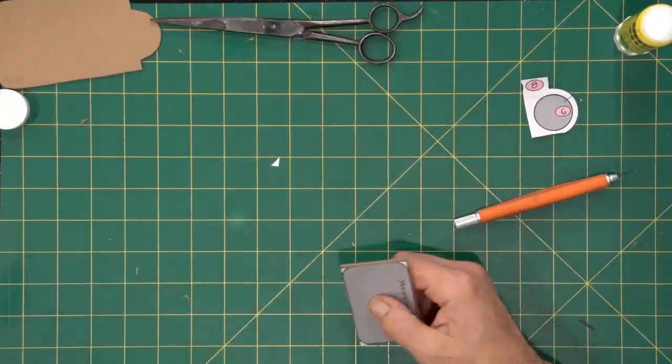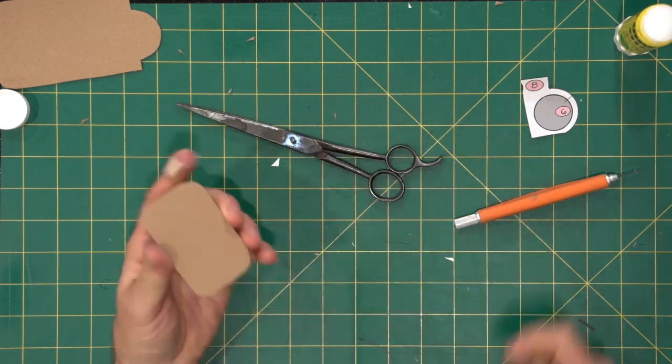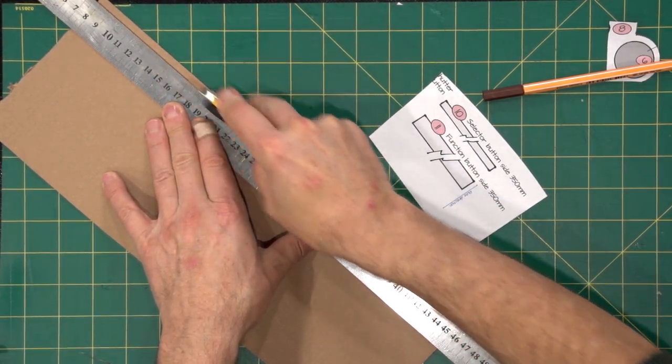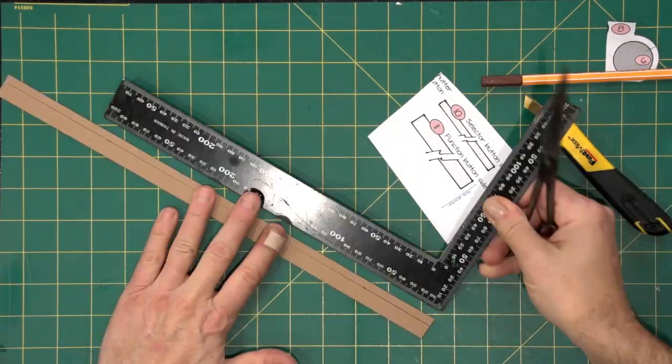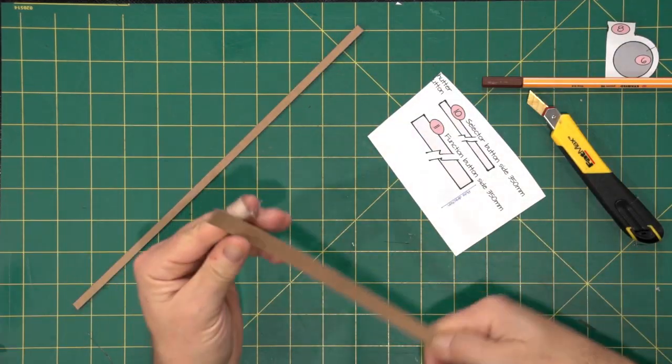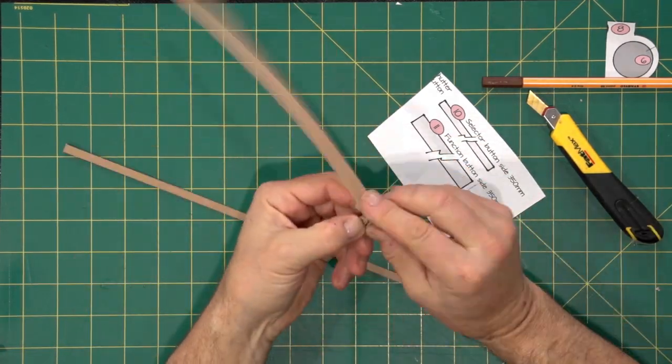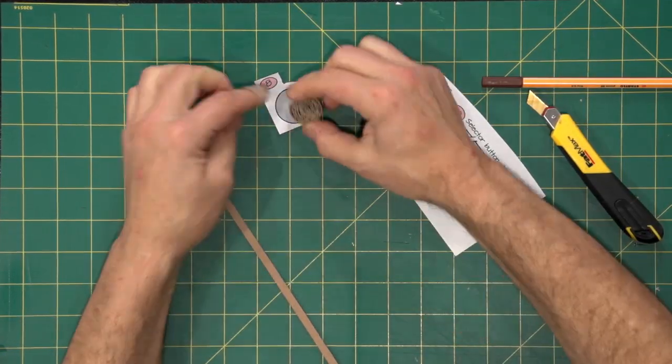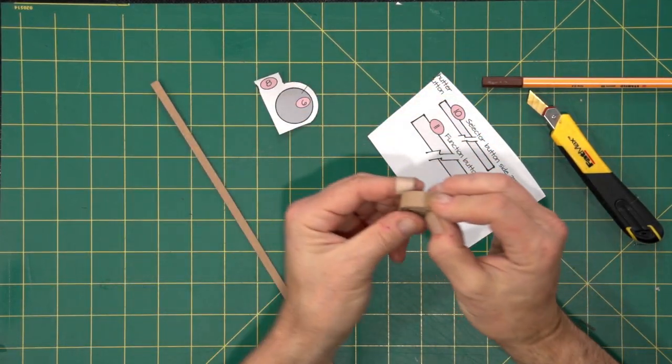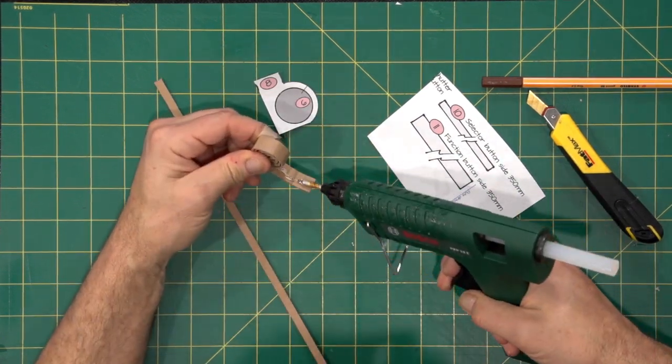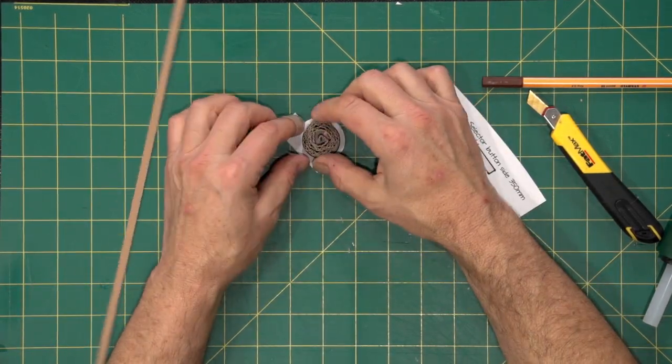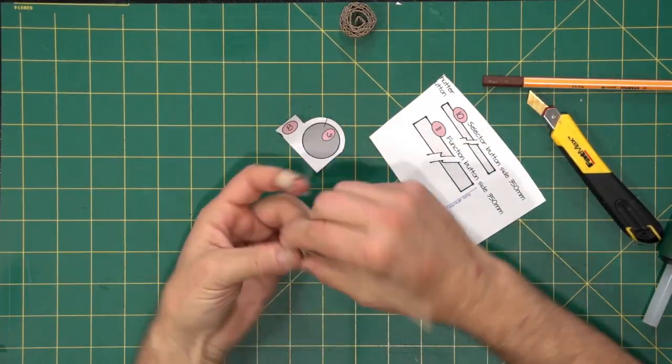Then the monitor window. We need to create the two buttons: button number six, which is the selector wheel, and button number five, which is the function button. Cut two thin strips. Give them a bit of a twist and curl them up. Spring them to about the right size, so both numbers five and six are the same size. Make it easy. Little bit of glue.